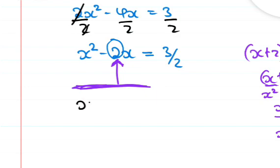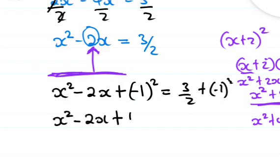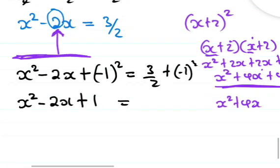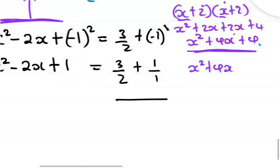So we have x squared minus 2x. Half of negative 2 is negative 1, and negative 1 squared is 1. We add 1 to both sides. On the right hand side, we get 3 over 2 plus 1, which gives us 5 over 2.